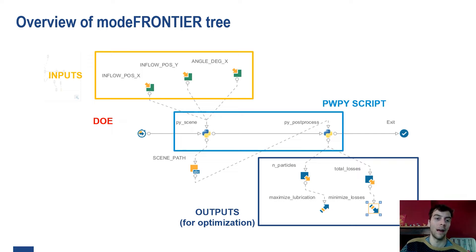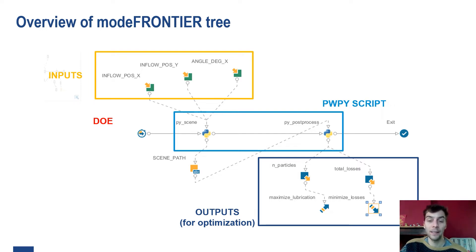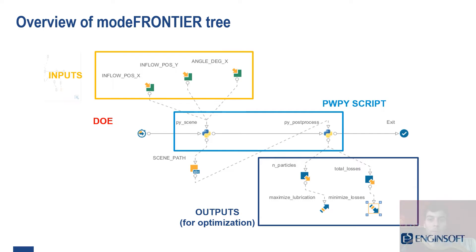We created a ModFrontier workflow with three inputs: the position X, position Y, and the orientation angle X of the inflow. We have a scheduler for a design of experiment setup and a PVPy Python script controlling our simulation, in order to change a template simulation based on the inputs provided by ModFrontier. At the end, another script allows for the automatic post-processing of the simulation and extracts the overall oil amount in a specific area and the total losses on the gears.